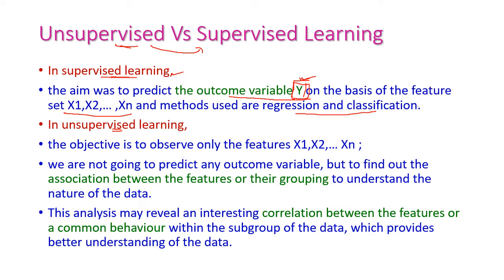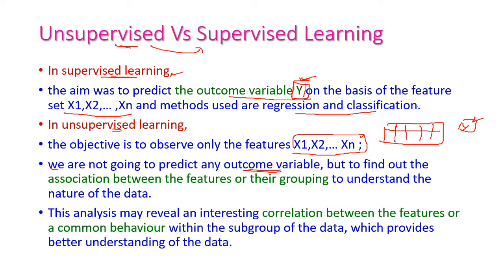But when we come to unsupervised learning, we need to observe only the features x1, x2, up to xn. That is, from the given data set, we are going to analyze only the features — all features of the data. We are not going to predict any outcome variable. There is no y variable here. But we need to find the association between the features or their grouping to understand the nature of data — how the data is given in the data set, and what the relationships between the features are.